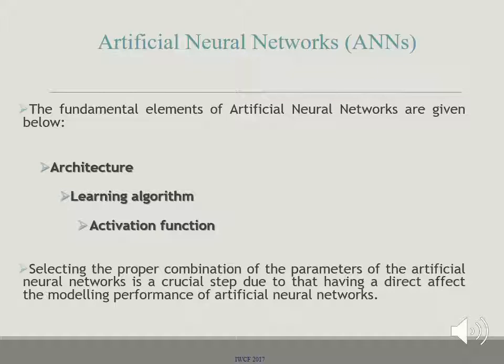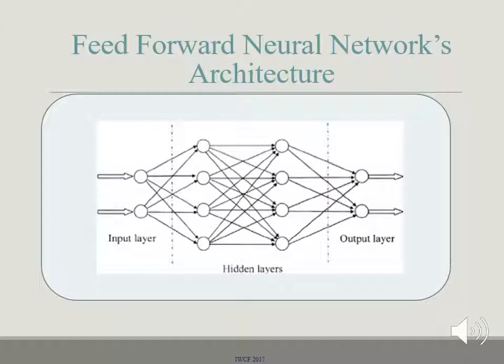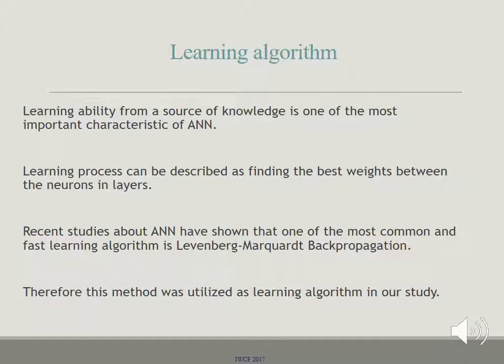The fundamental elements of artificial neural networks are architecture, learning algorithm, and activation function. Selecting the proper combination of these parameters is a crucial step due to its direct effect on modeling performance. The feed-forward neural network architecture has an input, hidden, and output layer, with signal flow in only one direction, and all neurons are interconnected between each layer. Learning ability from a source of knowledge is one of the most important characteristics of ANNs. A learning process can be described as finding the best weights between neurons in layers. One of the most common and fast learning algorithms is Levenberg-Marquardt backpropagation.